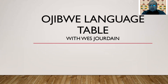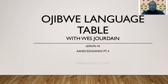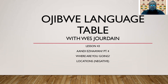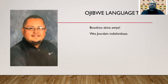Welcome back to Ojibwe Language Table with Wes Jourdain, lesson number forty-three. This week we are still on the 'Aandi ezhaayan' part four — where are you going, locations. This week we're going to negate these answers, and we'll get into a little bit about how that format is going to work. We always start with our self-introduction.